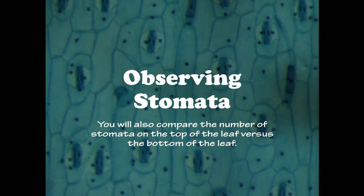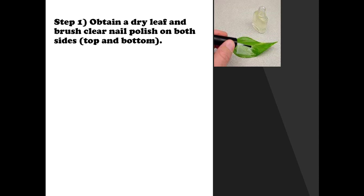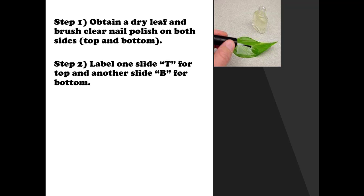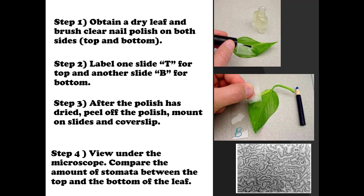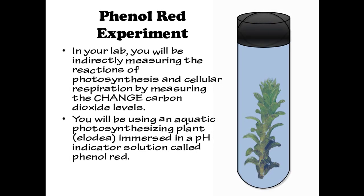You will also be comparing the number of stomata on the top of a leaf versus the bottom of a leaf. Obtain a dry leaf and brush clear nail polish on both sides — top and bottom. Take two microscope slides and label one T for top and the other B for bottom. Once the polish has dried, peel it off, mount it on the slides, and coverslip. Then view your slides under the microscope and compare the amount of stomata between the top and the bottom of the leaf.